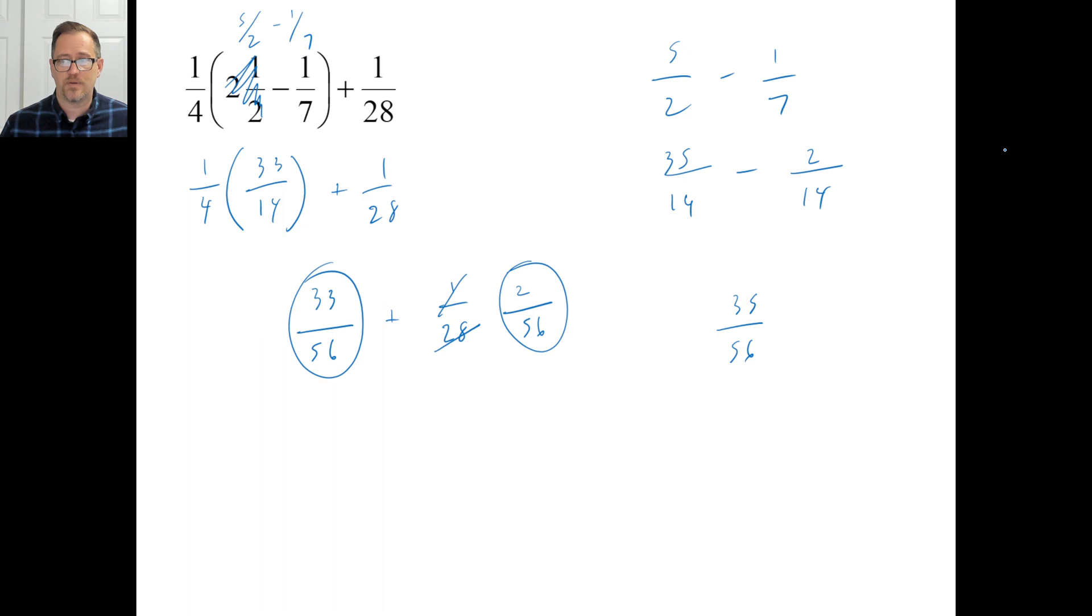How does that reduce? You tell me. You better know your times tables. Seven goes into both of those. Make sure you know that. Seven into 35 is five. Seven into 56 is eight. Five-eighths is the final answer.